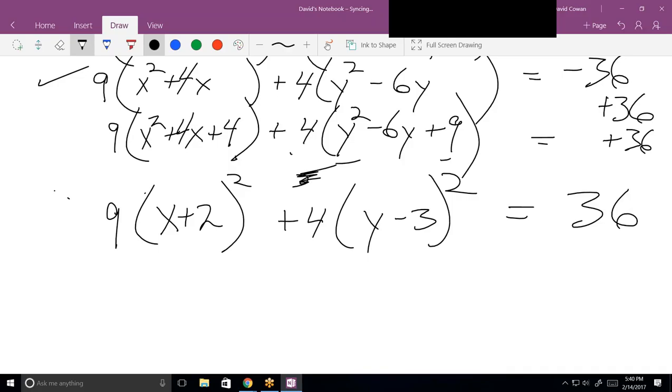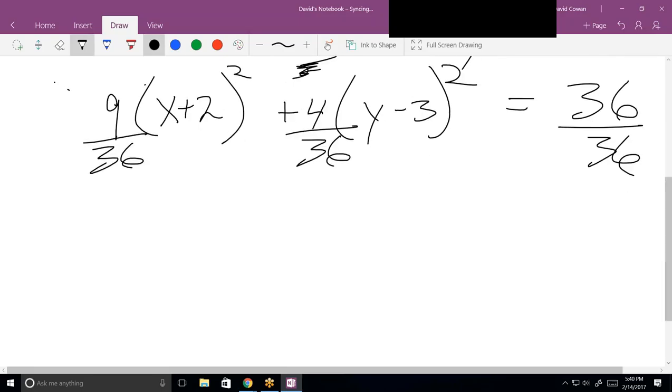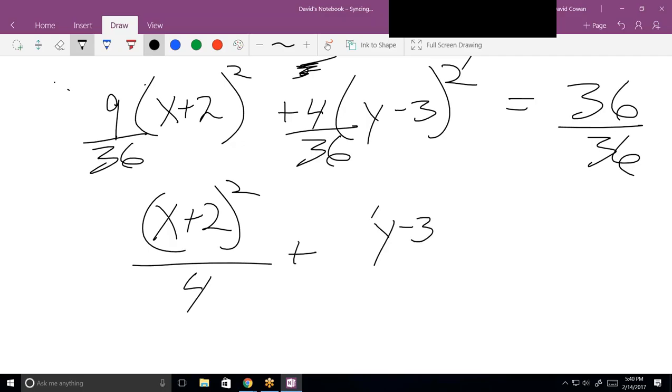Would you bring the 9 and 4 down, or would you get the 36 to 1? Get the 36 to 1. First of all, there's not really much you can do with the 9 and 4. It doesn't do any good to bring it down to the denominator until we get this to 1. When we divide both sides by 36, that's going to bring these down to the denominator anyway. So what goes here in the denominator? 4. What goes here? 9.